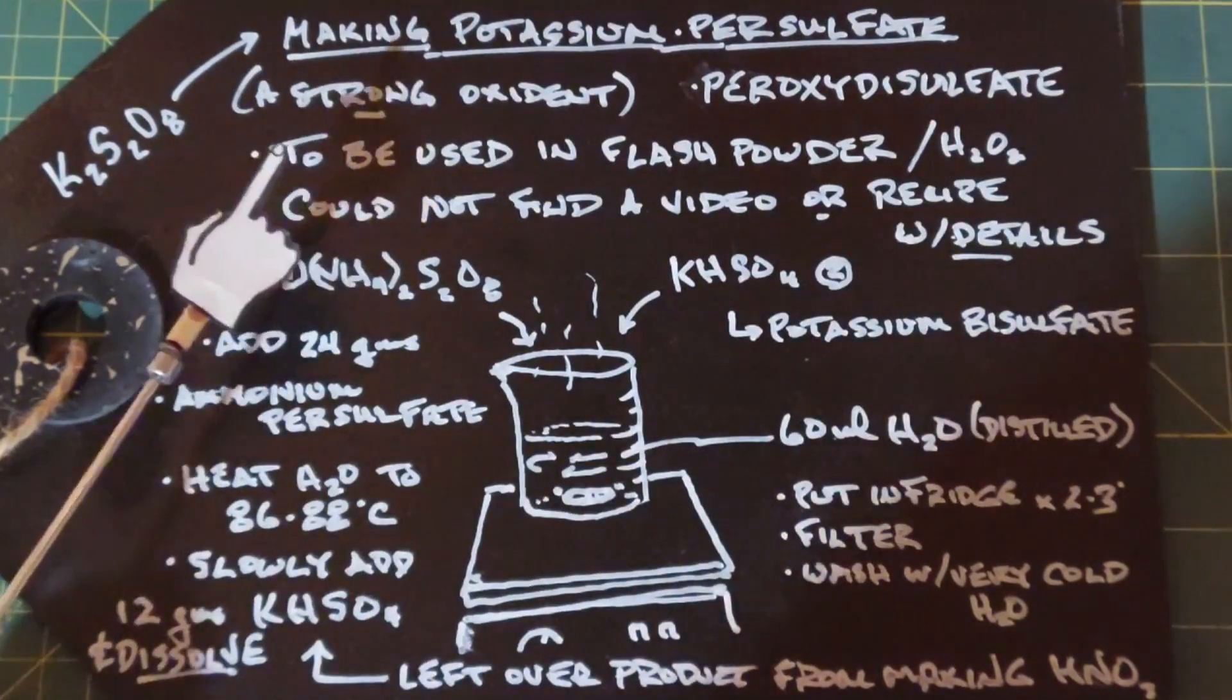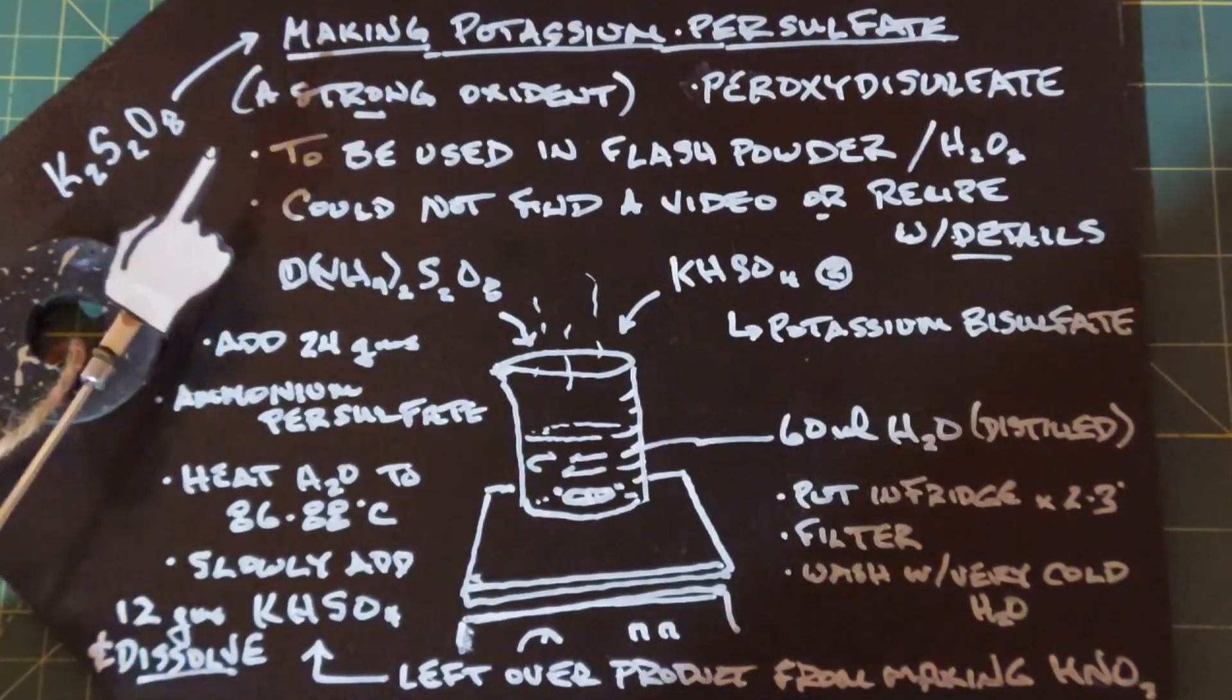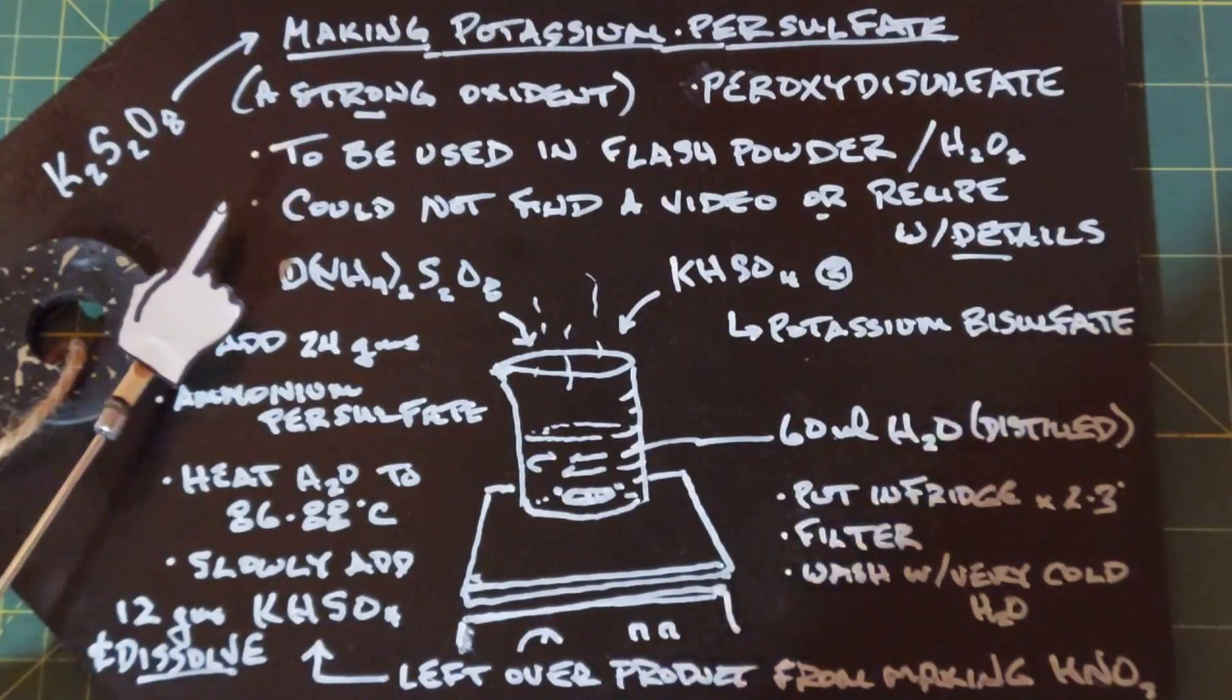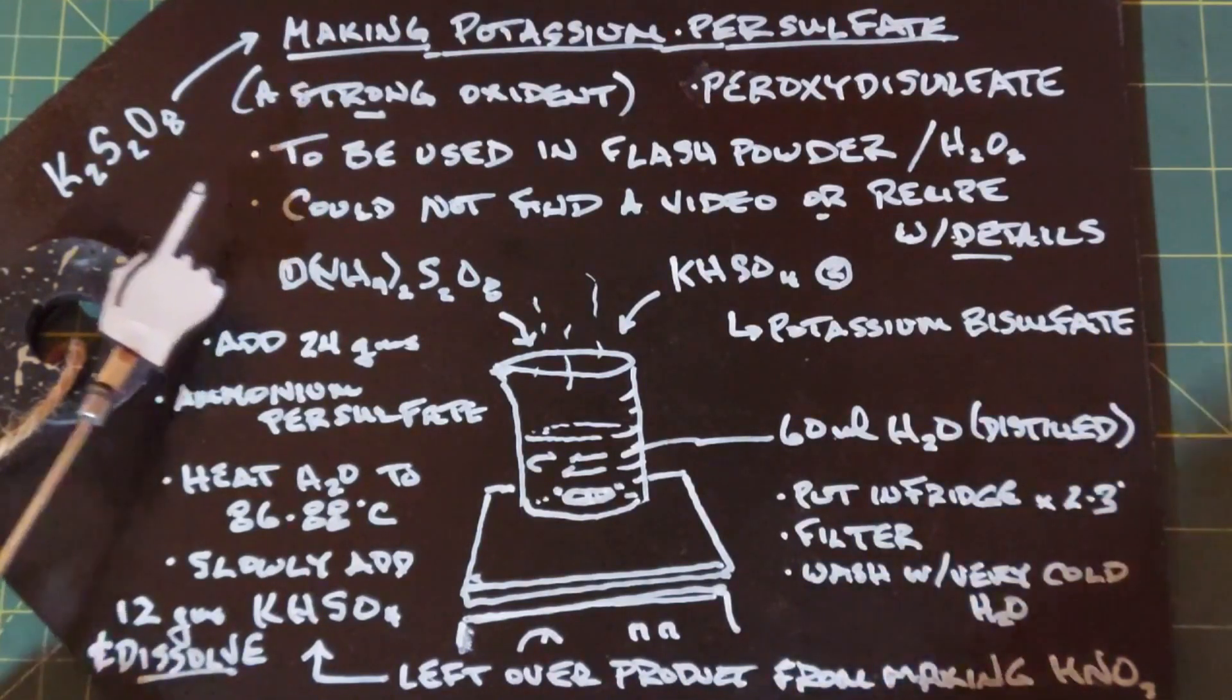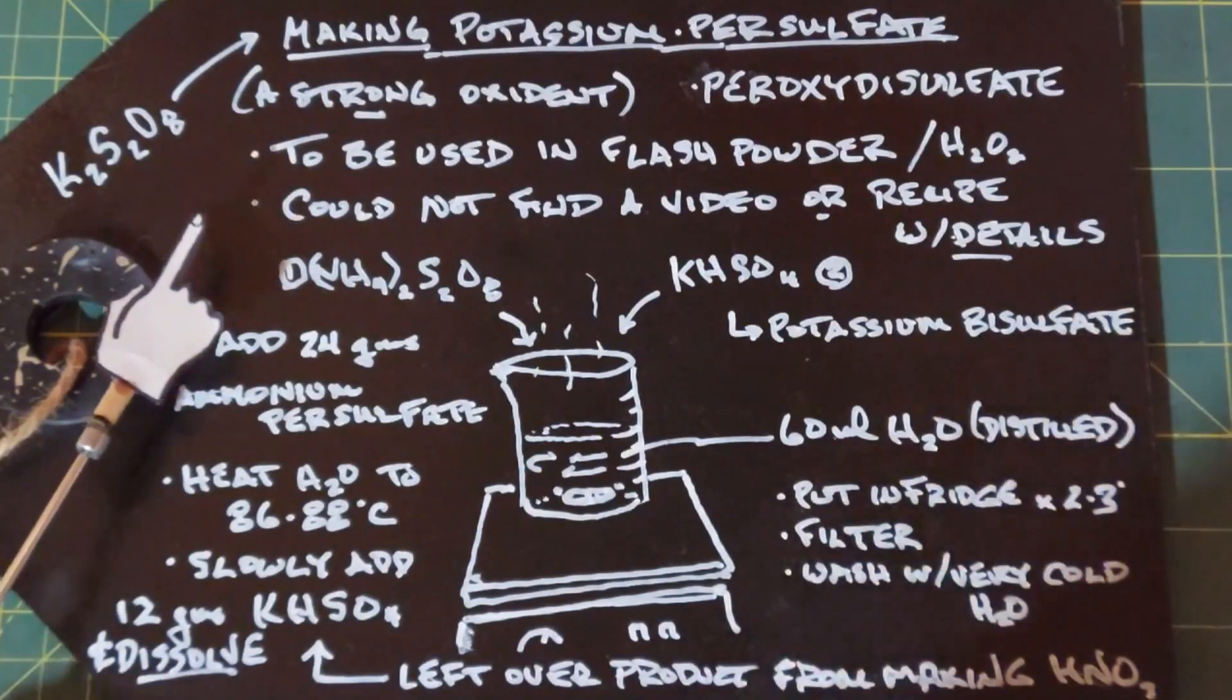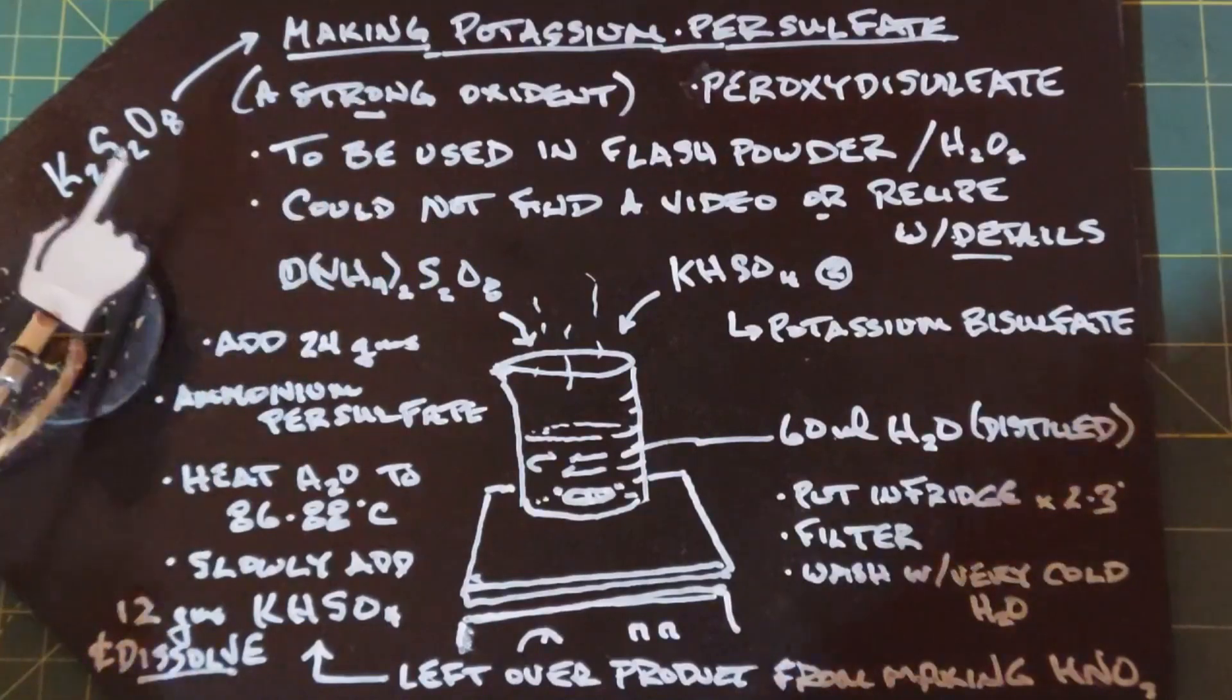I could not find a video or a recipe with details on this. So I read up on a couple of items that I found online and sort of put this together myself. There may be a better recipe for getting a higher yield, but this is what I did and it worked.